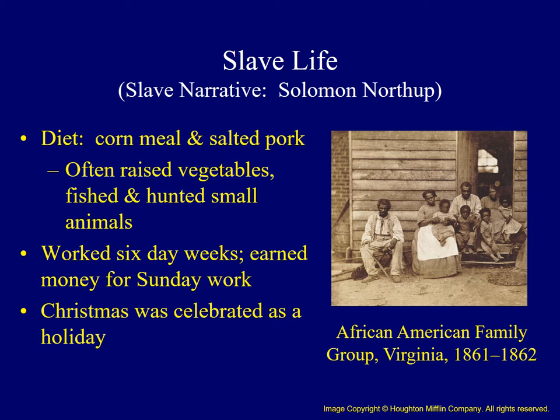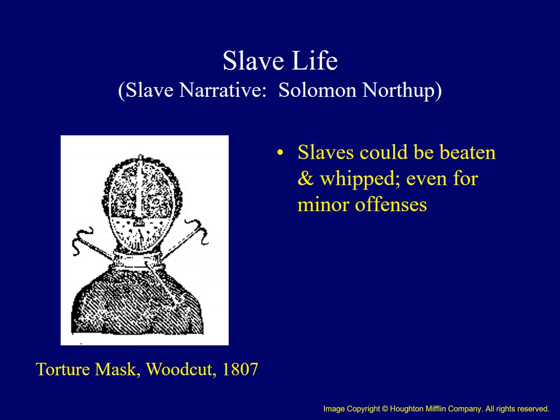Slaves could expect a small amount of cornmeal and three to four pounds of salted pork as food for each week. They often supplemented their diet with a small vegetable garden. Northup caught fish and described roasted possum as a delicacy. Slaves worked six days a week but could earn extra money if they worked on Sundays. Christmas was a welcomed holiday — celebrations lasted over three days, and it was the only time they could eat to their fill. Northup describes many beatings he and other slaves received at the hands of their masters, sometimes whipped for minor offenses.